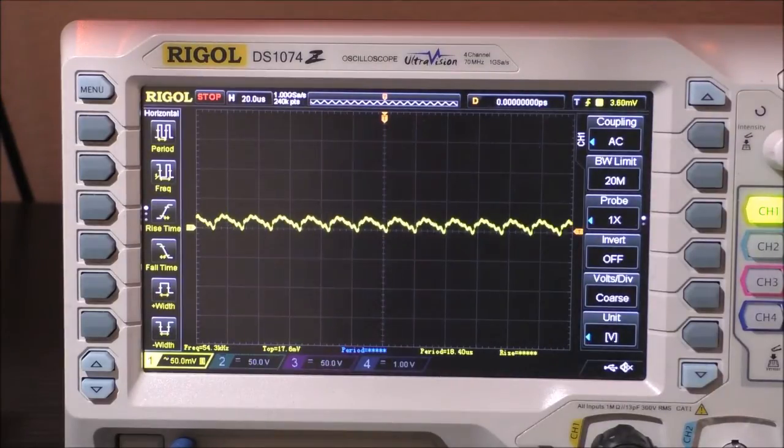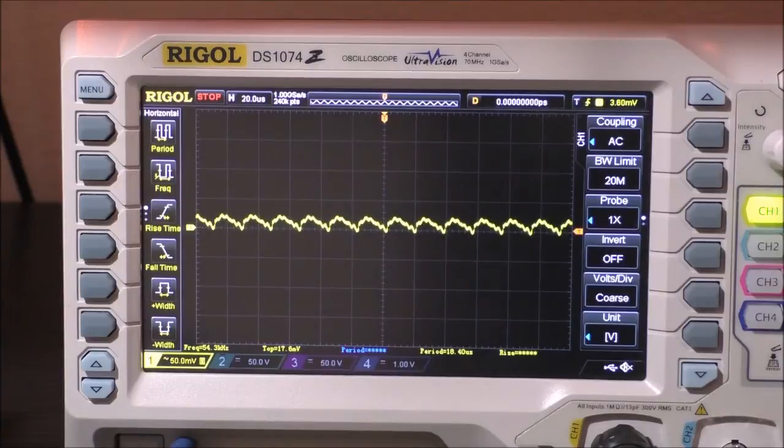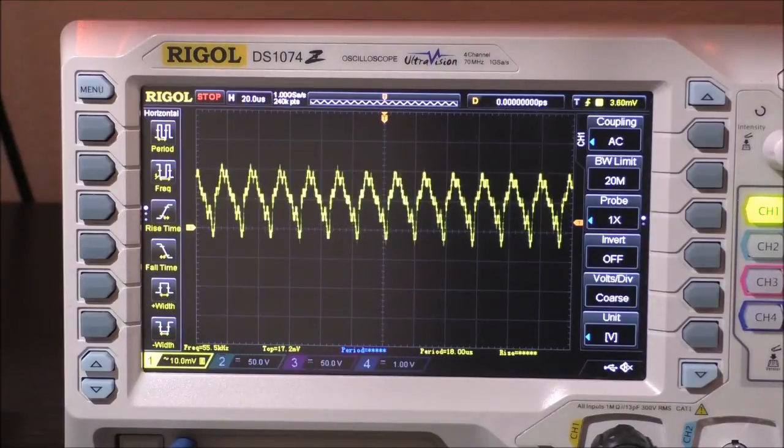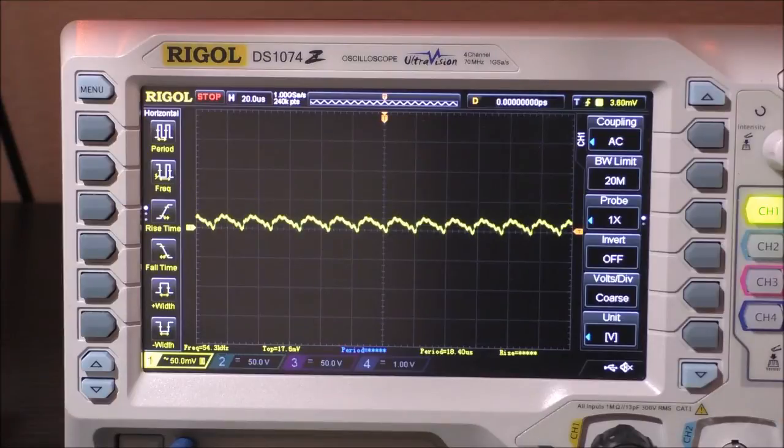And this is the ripple with 240 volt input. As we can see, the switching frequency has now dropped to 54 kilohertz. And it looks like it's just about 25 millivolts peak to peak. So again, very good performance coming from the Delta power supply.